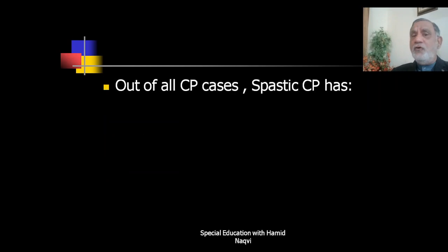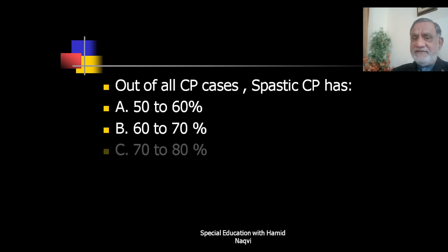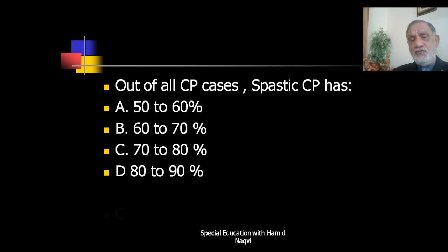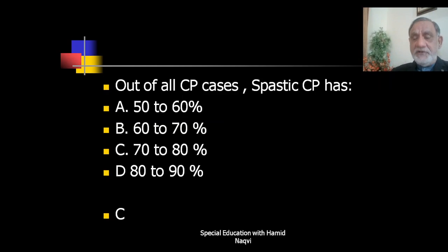Next question: Out of all cerebral palsy cases, what percentage are spastic type — 60–70%, 70–80%, or 80–90%? The correct answer is C — spastic type CP accounts for 70–80% of all CP cases, the maximum of all types.